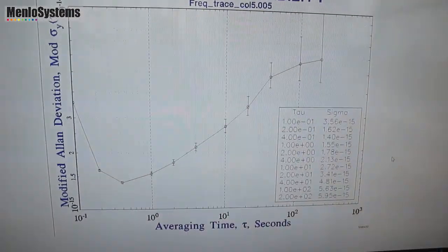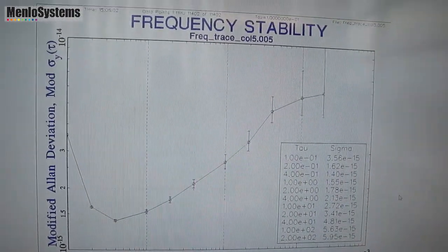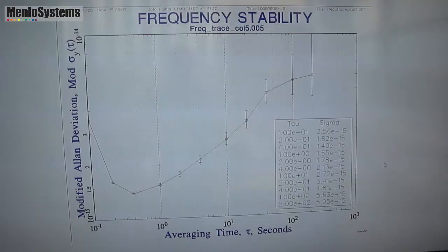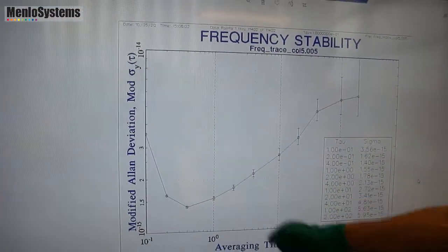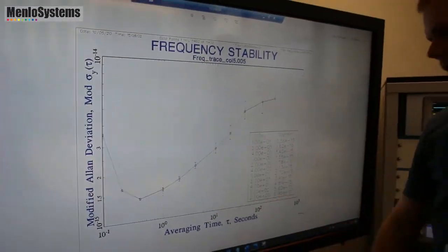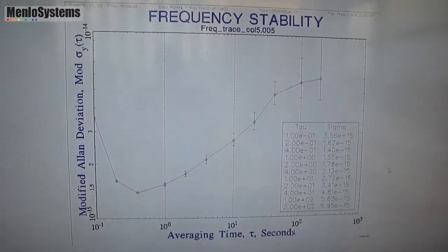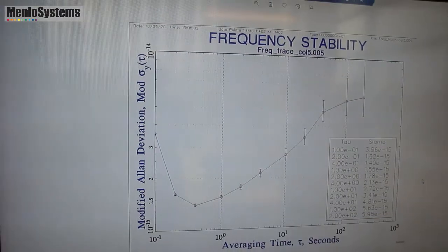Now typically you're calculating something like an Allan deviation. So here it's modified Allan deviation. You see here at 1 second we have 1.7 times 10 to the minus 15. So subhertz.